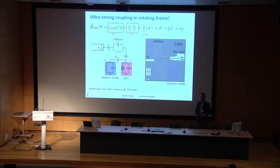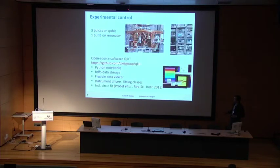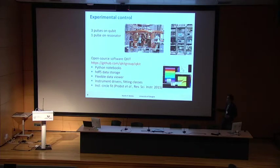We also have the flux bias here, and we measured everything in our lab in Karlsruhe. Here's an image of one of our cryostats — the cold plate is filled with lots of microwave electronics, components, filters, and circulators.